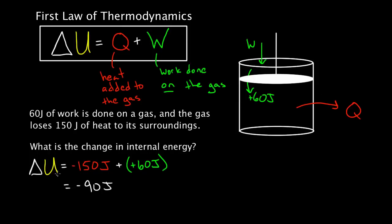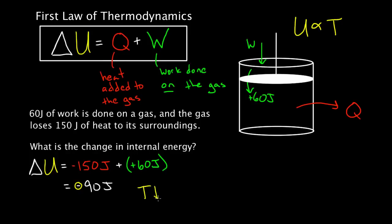The change in internal energy would be negative 90 joules. But why do we care? The internal energy of the gas is always proportional to the temperature, whether it's a monatomic, diatomic, or triatomic molecule. So if the internal energy went down by 90 joules, the temperature went down — this gas is going to be cooler when you end this process compared to when it started. Even though you added 60 joules of work energy, it lost 150 joules of heat energy. That's a net loss, and the temperature goes down.